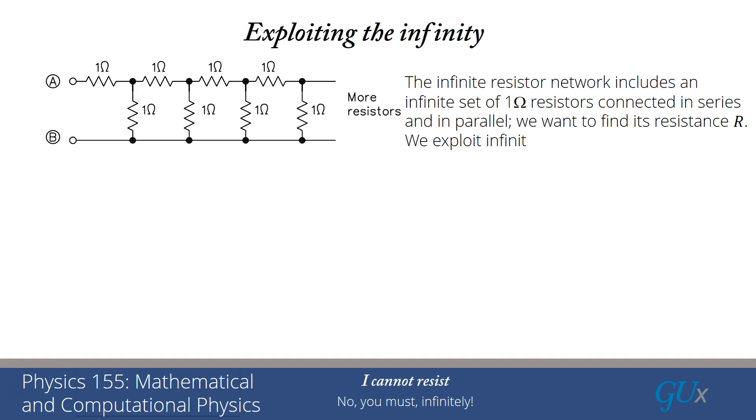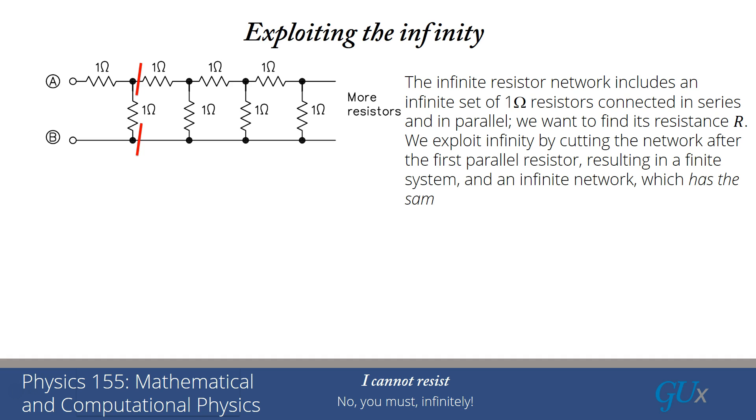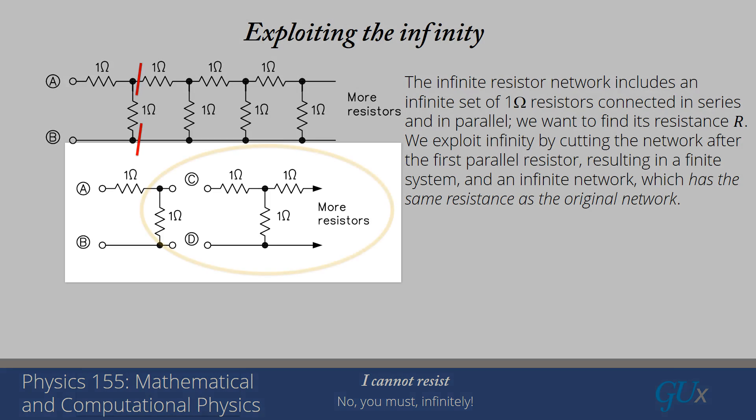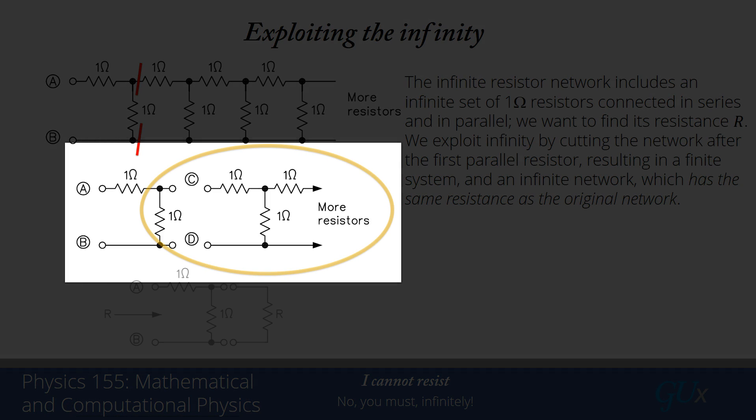We're going to start by exploiting that property of infinity by cutting this network after the first parallel resistor. That results in a finite system with an infinite network. And that infinite network has the same resistance as the original network because it's still the same infinite network, shown in this circled region.